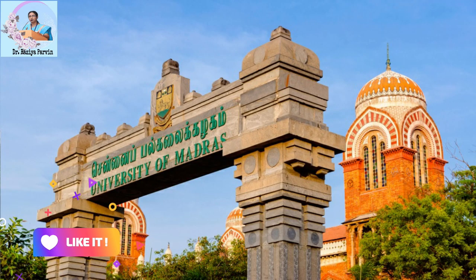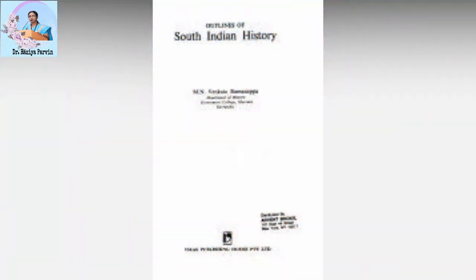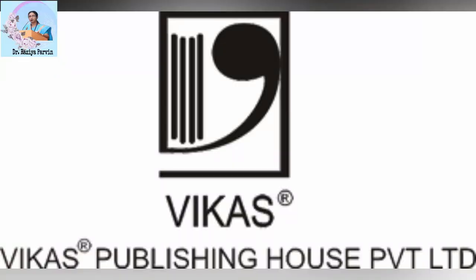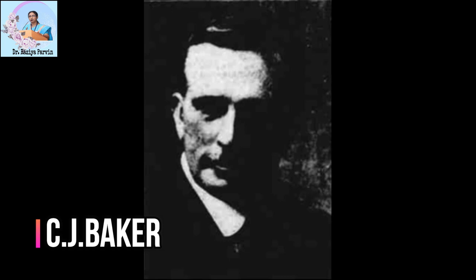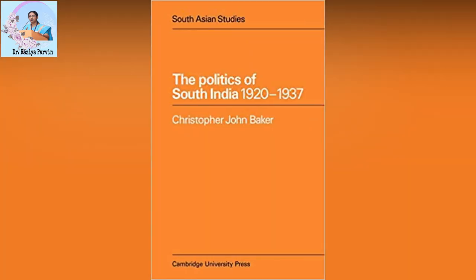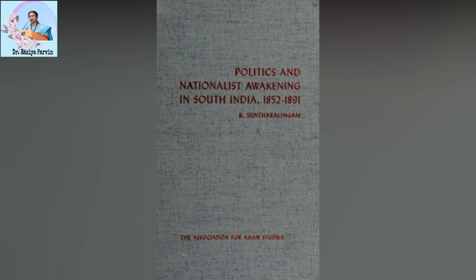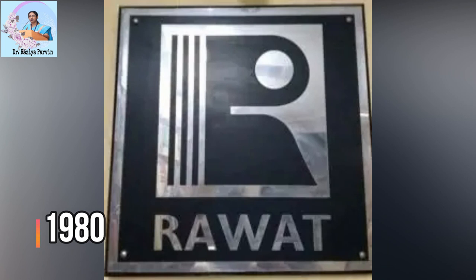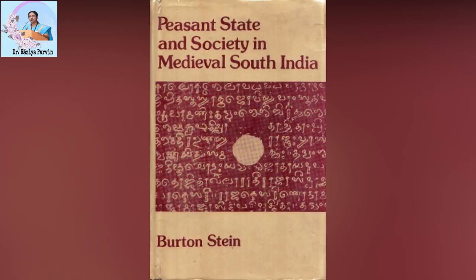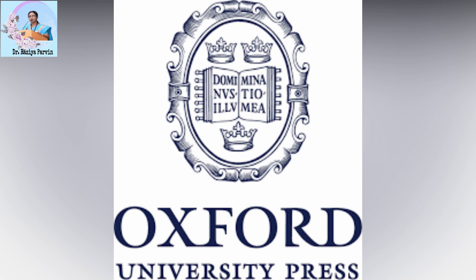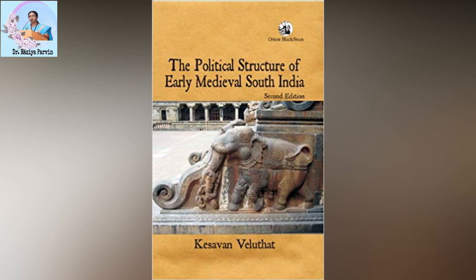Vengata Ramanappa has written 'Outlines of South Indian History,' published in 1975 by Vikas Publishing House. C.J. Baker has written 'The Politics of South India,' published by Cambridge University Press in 1977. R. Sundaralingam has written 'Politics and Nationalist Awakening in South India between 1852 and 1891,' published in 1980 by Ravar Publications. Another famous author, Burton Stein, has written 'Peasant State and Society in Medieval South India,' published in 1980 by Oxford University Press.